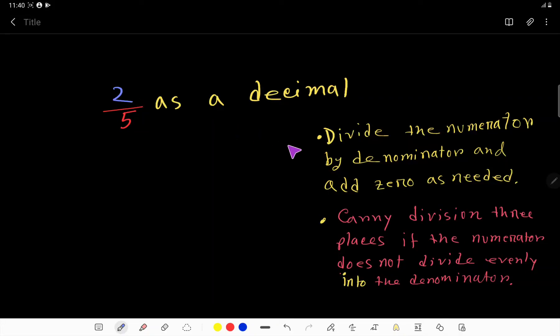To convert 2 by 5 to a decimal, we have to divide the numerator by the denominator. So we apply the long division method where the numerator is 2 and we divide it by the denominator 5.